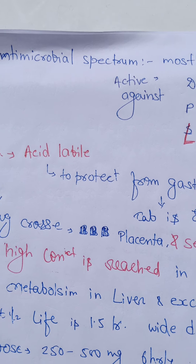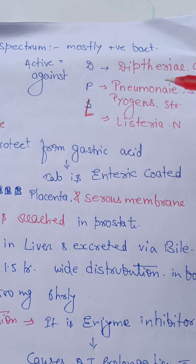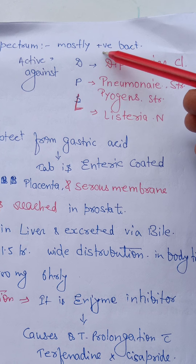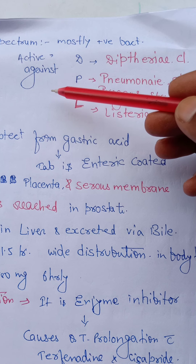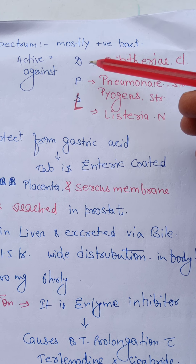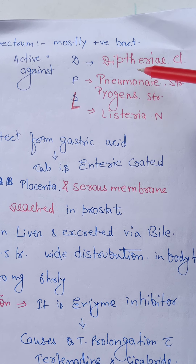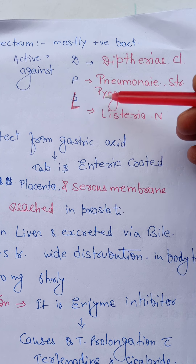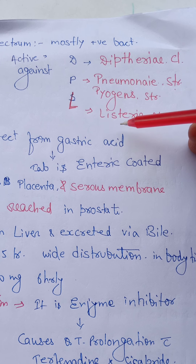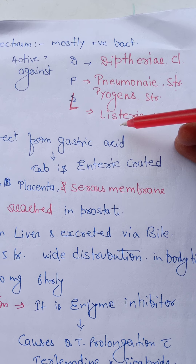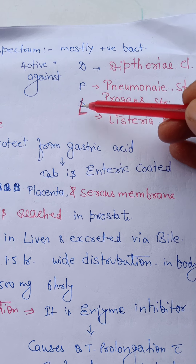The antimicrobial spectrum of the erythromycin group is mostly active over gram-positive bacteria. These drugs are active against the mnemonic DPL: D for diphtheria (Corynebacterium diphtheriae), N for pneumonia and pyogenes — that is Streptococcus pneumoniae and Streptococcus pyogenes — and L for Listeria. Thus, erythromycin is very much active against the DPL group.